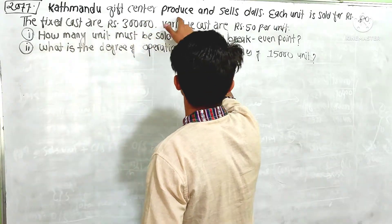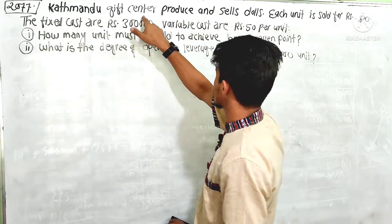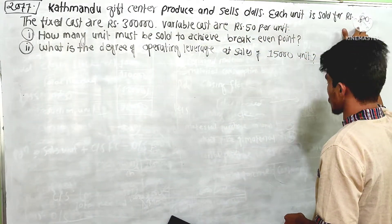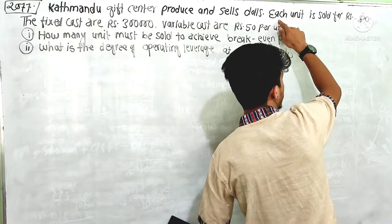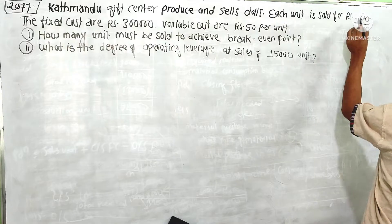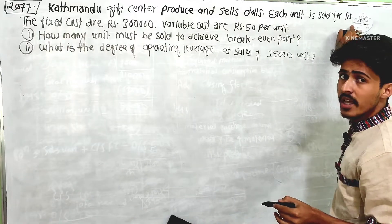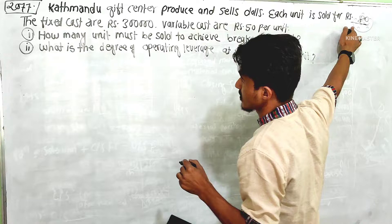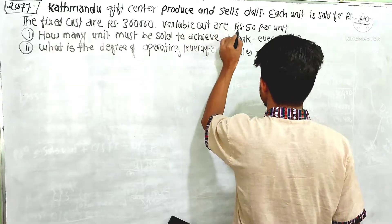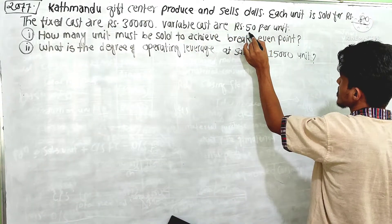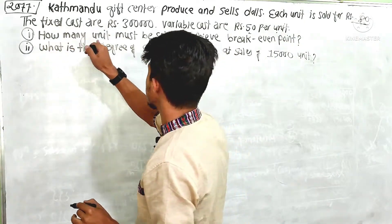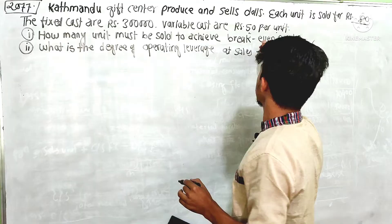In 2017, Katmandu Gift Center produced and sold dolls. Each unit is sold for Rs. 80. The fixed cost is Rs. 3 lakhs. The variable cost is Rs. 50 per unit. And how many units must be sold to achieve the break-even point?